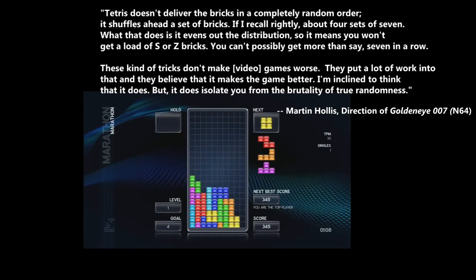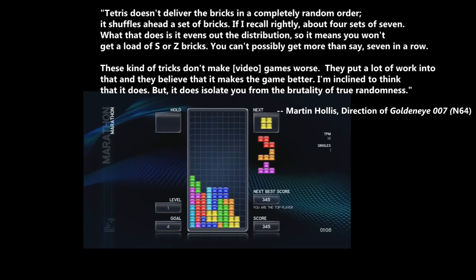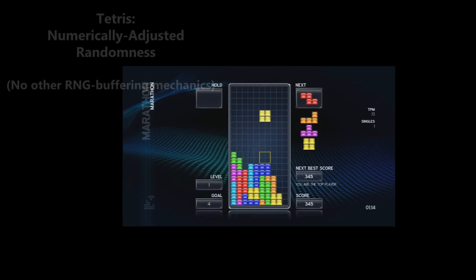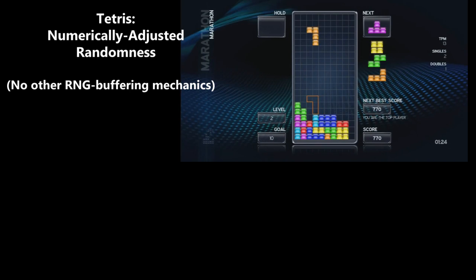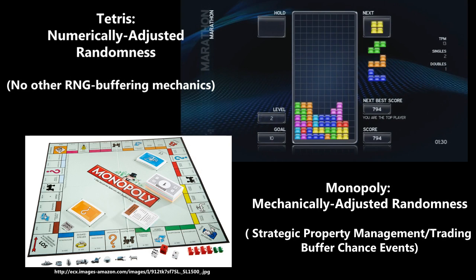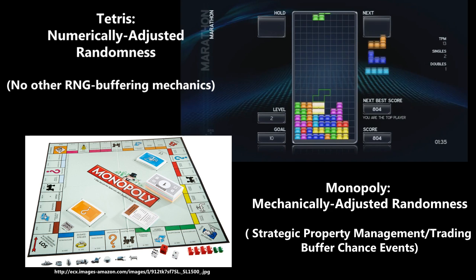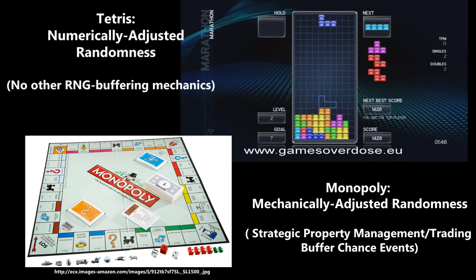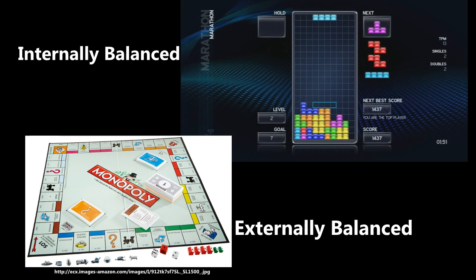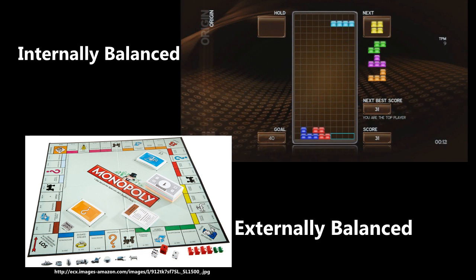These kinds of tricks don't make video games worse — they believe it makes the game better, and it does isolate you from the brutality of true randomness. If the block order were truly random, a player could get 60 line blocks or 1,000 L blocks in a row, and the best Tetris player in the world could be beaten by someone who just had fortunate randomness. This is in stark contrast to a board game like Monopoly, where dice rolls are random beyond our ability to predict. The key point is that randomness was intentionally reduced in Tetris to make the game more fun, and the fact that it's remained a competitive title for decades speaks to the overall fairness of the game.